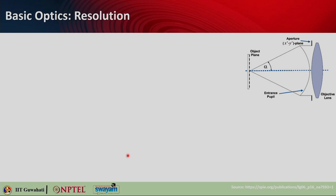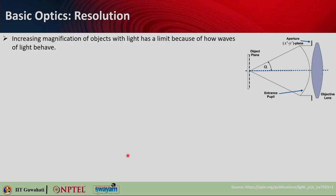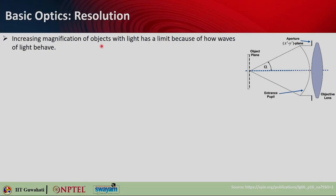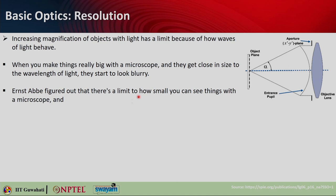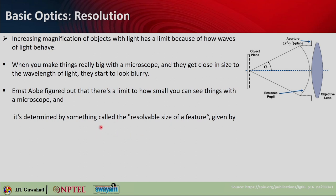Another important parameter in magnification is the resolution — what is the minimum size that you can see? Increasing magnification with light has a limit because of how waves of light behave. When things get close in size to the wavelength, they start looking blurry. Ernst Abbe figured out that there is a limit to how small you can see with a microscope, determined by the resolvable size of a feature: r_a = lambda / (2 n sin(alpha)), where alpha is the angle of incident light and n sin(alpha) is the numerical aperture.